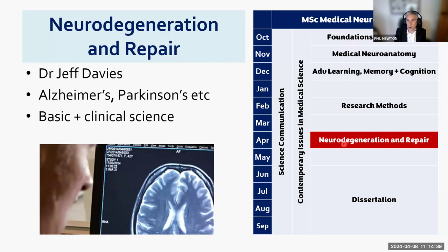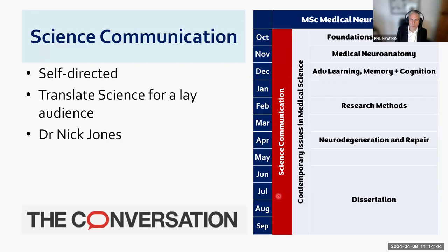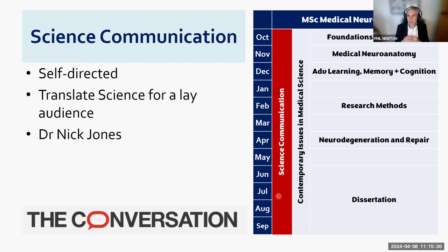Running alongside the short taught modules are two longer, thinner modules. The first is Science Communication, a largely self-directed module run by Dr Nick Jones. Students learn to translate science for a lay audience — for example by writing articles for outlets like The Conversation. The reason we include it is that explaining complex topics to non-experts is itself a powerful way to test and deepen your own learning.